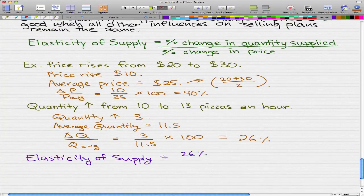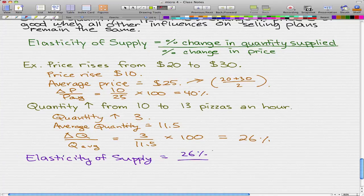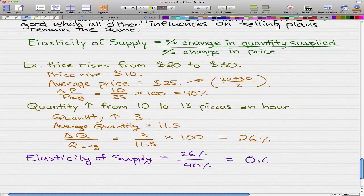Which is 26%, dividing that by the percentage change in price. The percentage change in price we calculated was 40%, and that overall gives us 0.65. And that's our elasticity of supply.